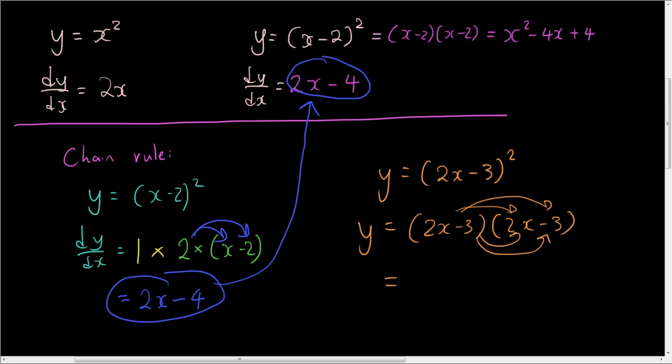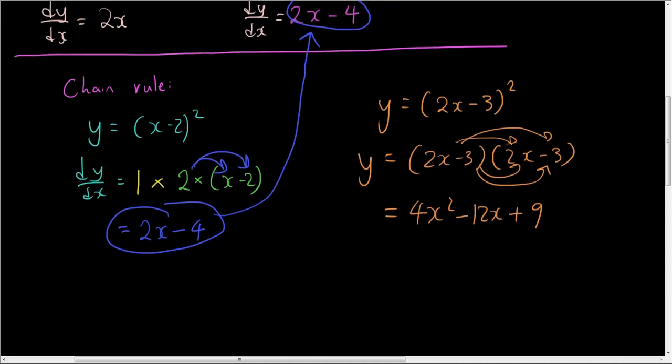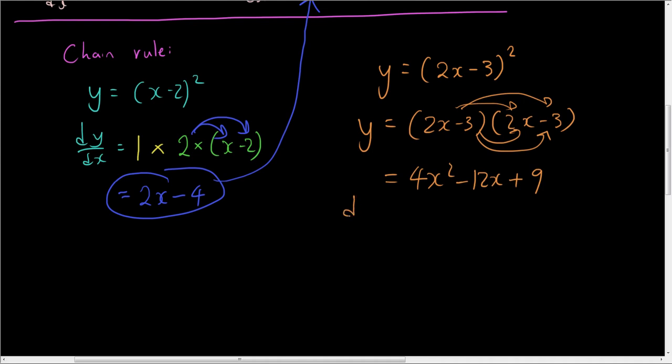Which takes a long time. So it is 2x times 2x is 4x squared. Minus 3 times minus 3 is plus 9. Minus 3 times 2x is negative 6x. Minus 6x is negative 12x. And then you are going to differentiate it.